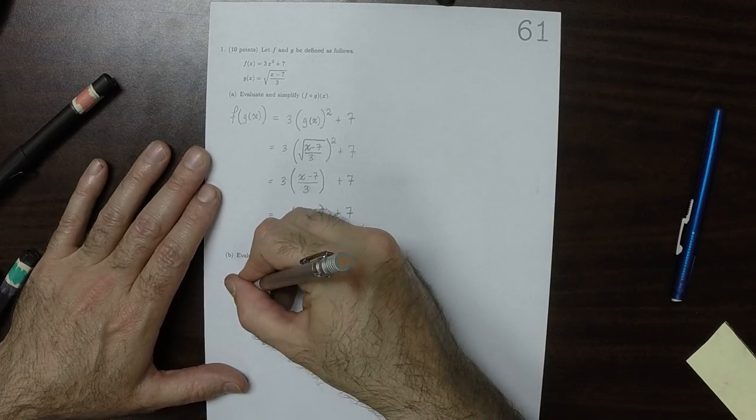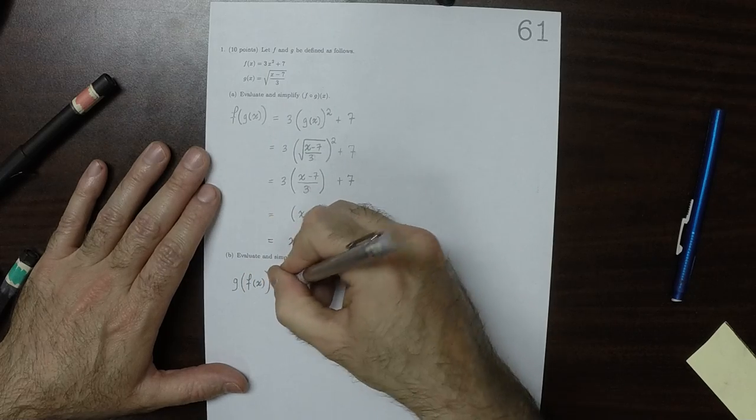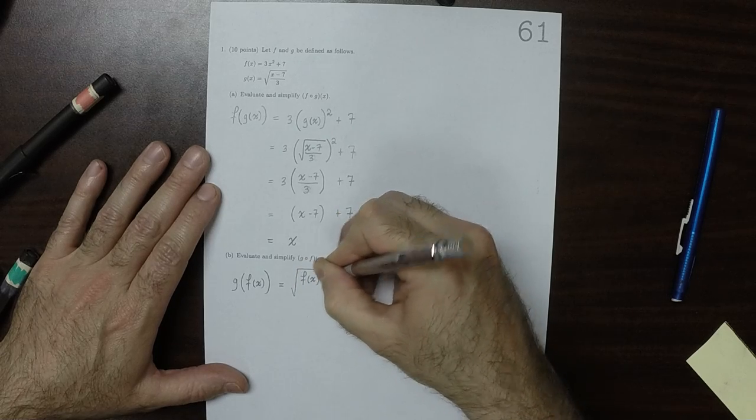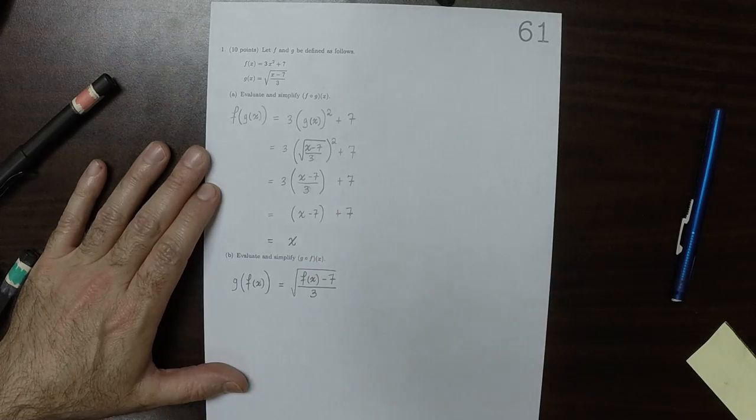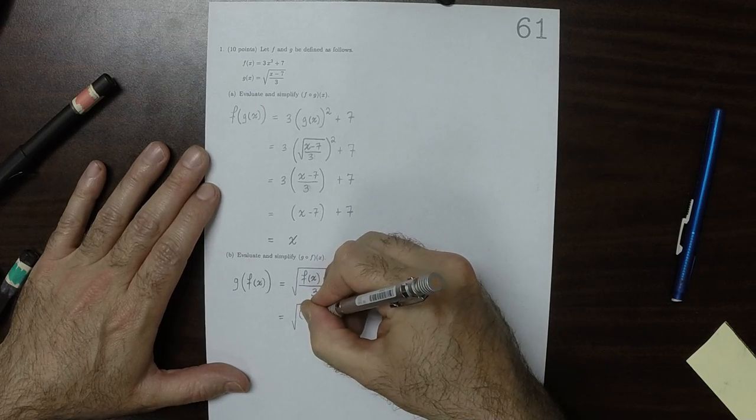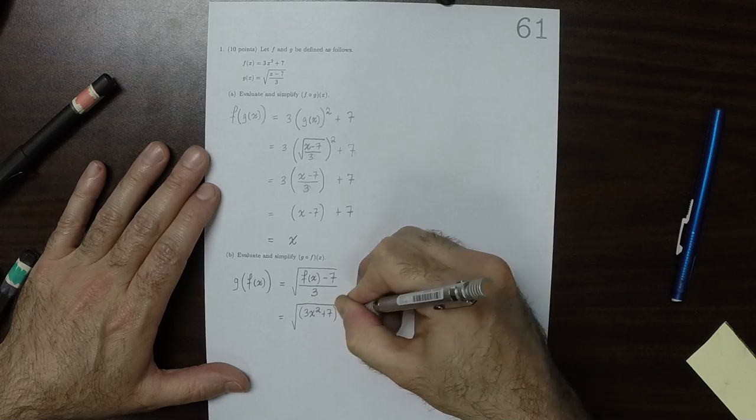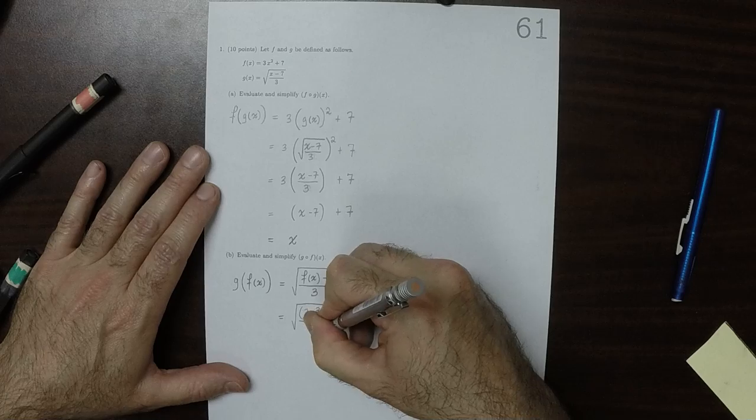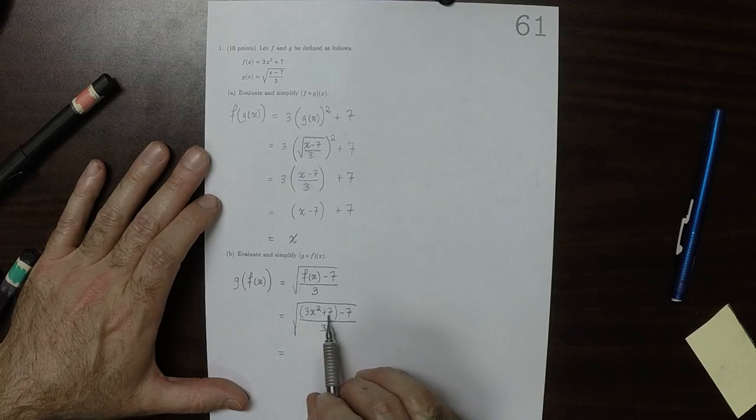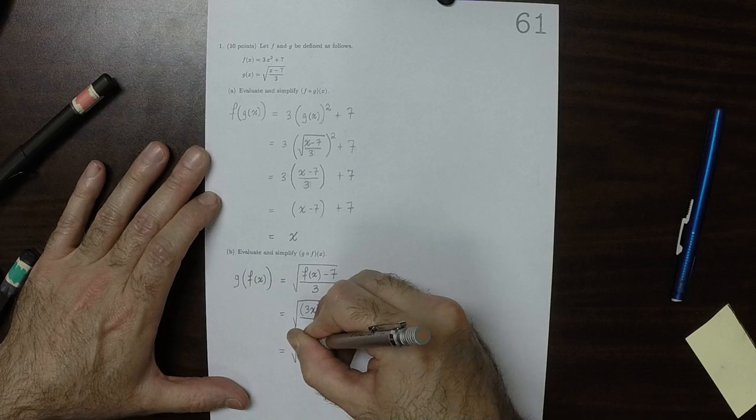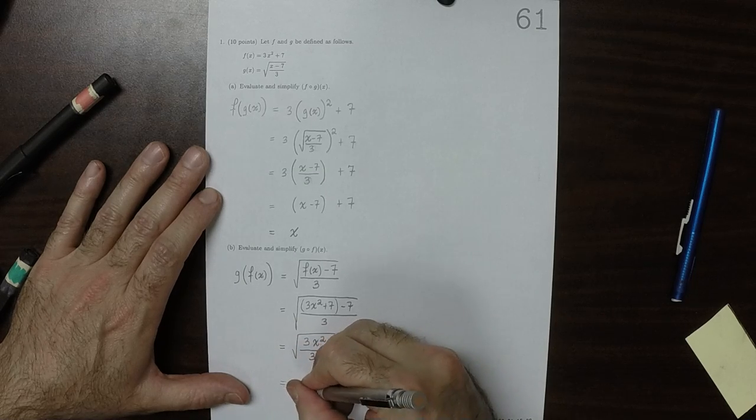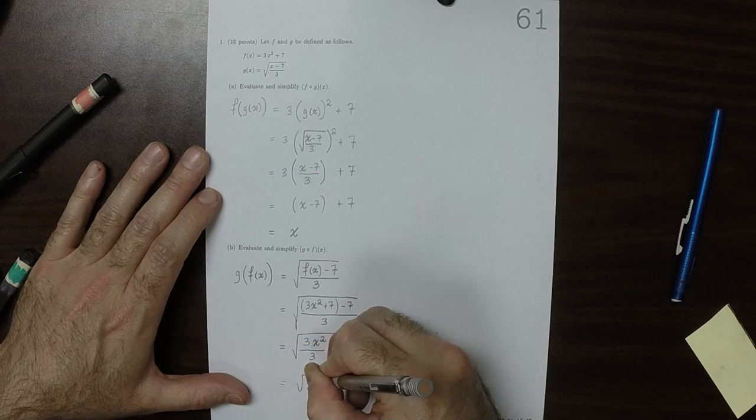Whereas for this one, g of f of x, well, that is square root of f of x minus 7, and then all over 3. That would be square root of 3 x squared plus 7 minus 7 divided by 3. Okay, so now those 7's will cancel. The 3's will cancel.